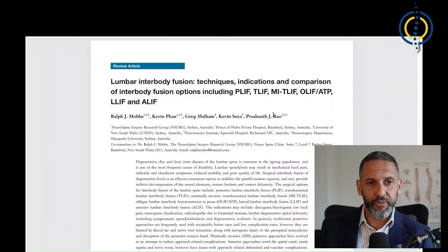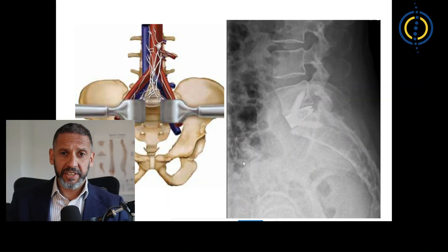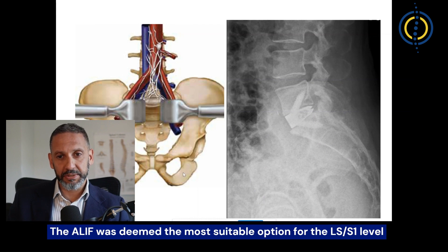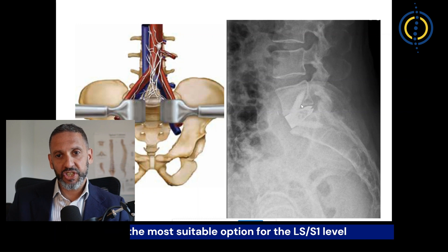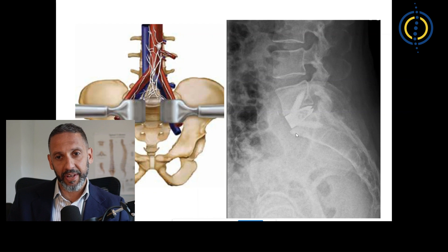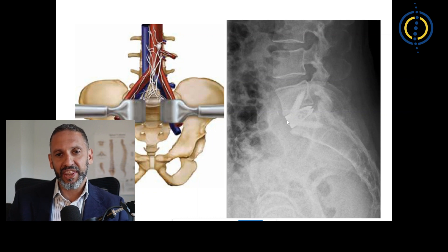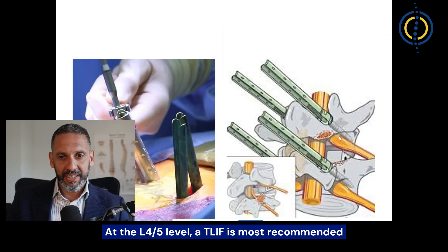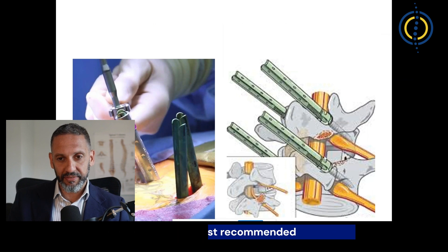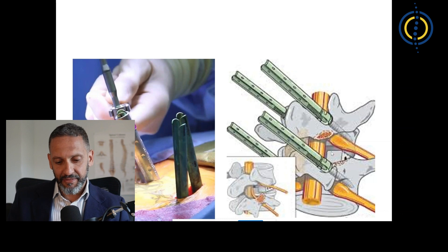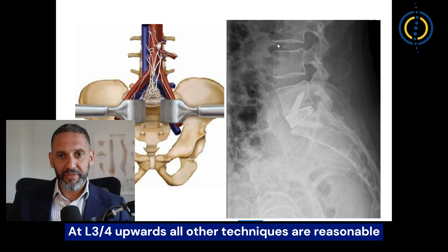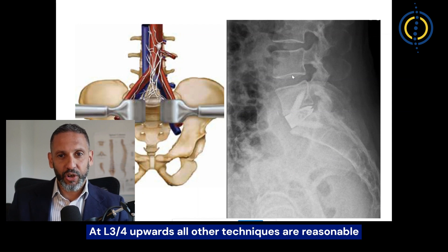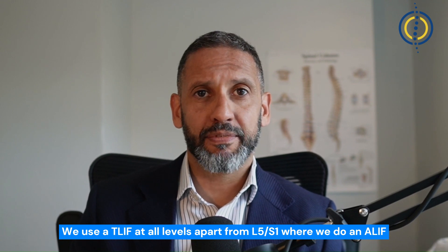This review article compares the different approaches for different segments in the spine. The study recommended that at the L5-S1 level, the lowest level in the spine, the ALIF is probably the better procedure achieving the best outcomes, because you can simply get a much bigger cage here at the bottom. It's important at the bottom of the spine where you get this acute curvature, and you can restore the disc height better with a larger cage. At the level above, L4-5, the recommendation is a TLIF — transforaminal lumbar interbody fusion — and that can all be done from the back of the spine through this minimally invasive technique. And then at the levels above that, L3-4 and upwards, all other techniques are reasonable. That's why in my personal practice I do the TLIF at all levels except for L5-S1 where I do an ALIF.